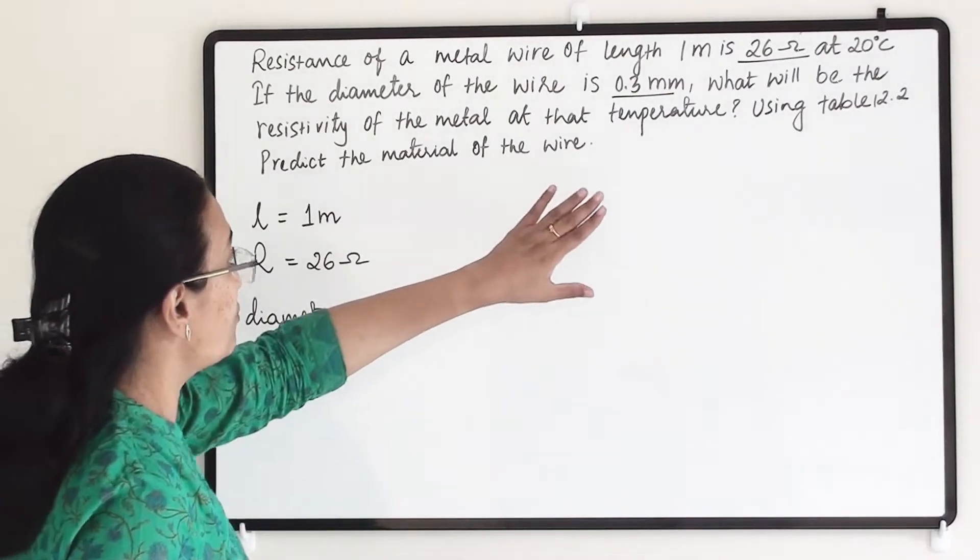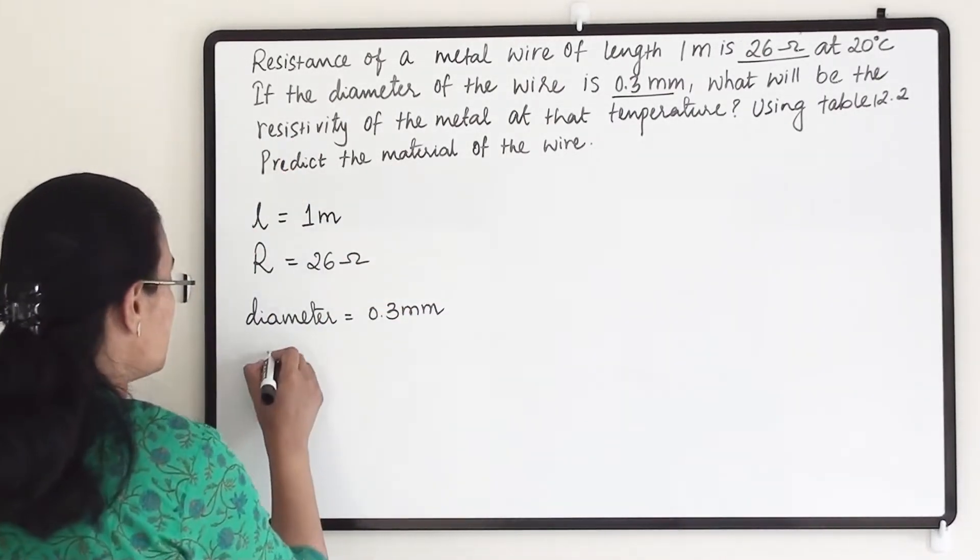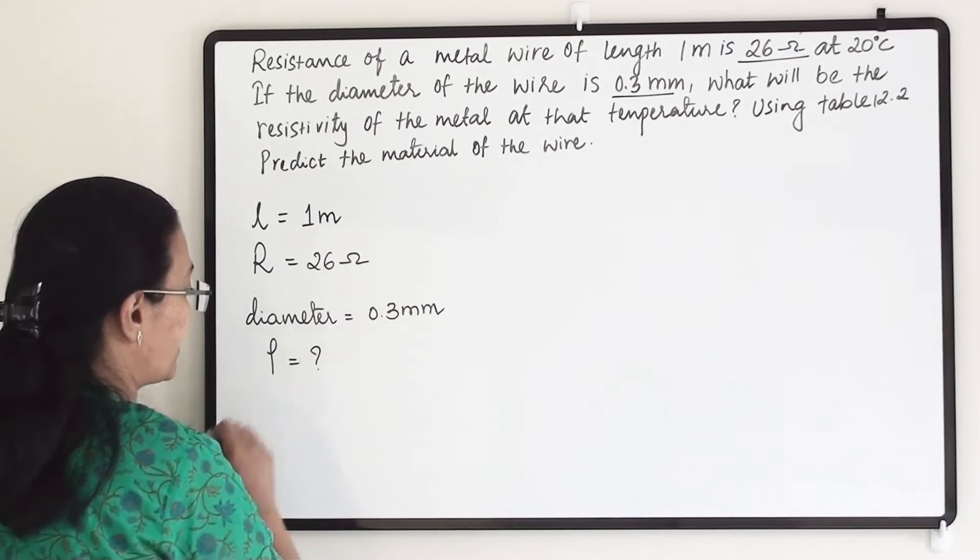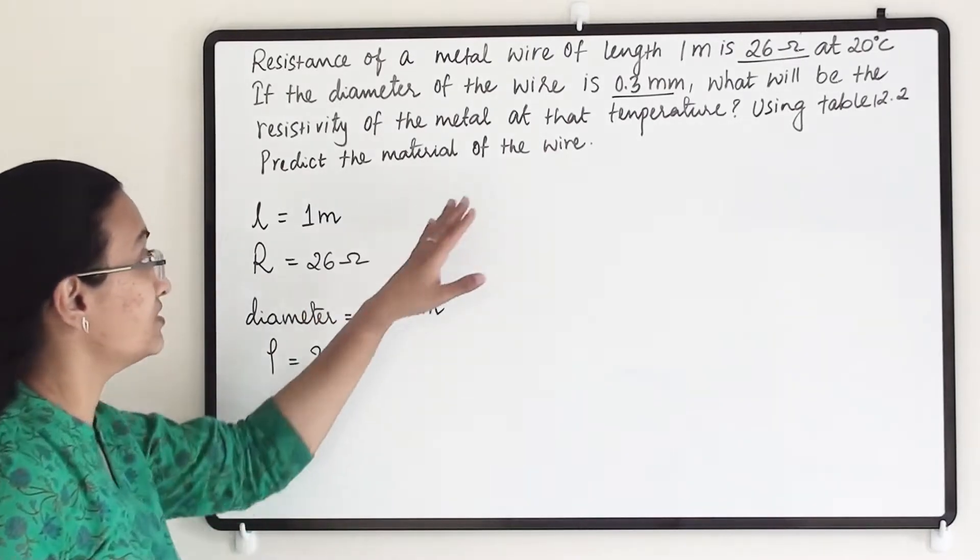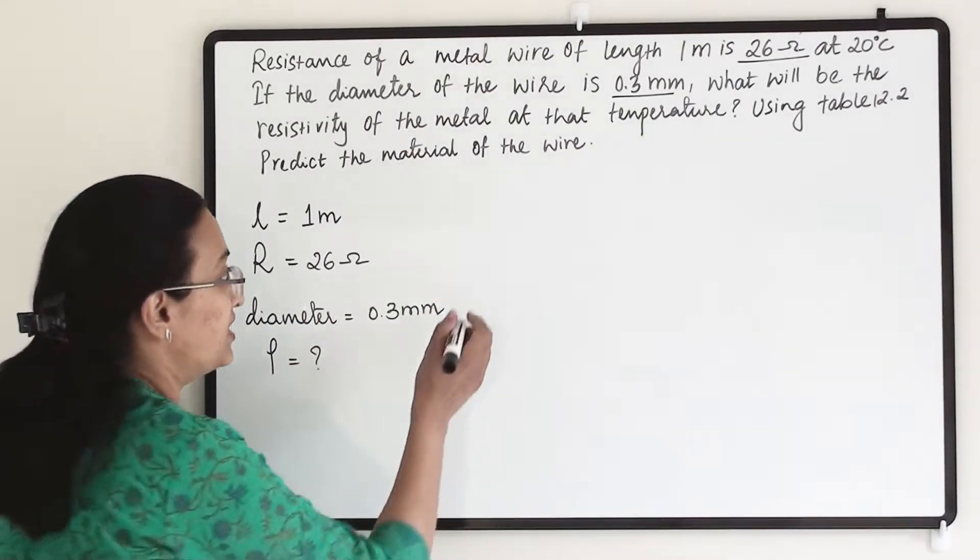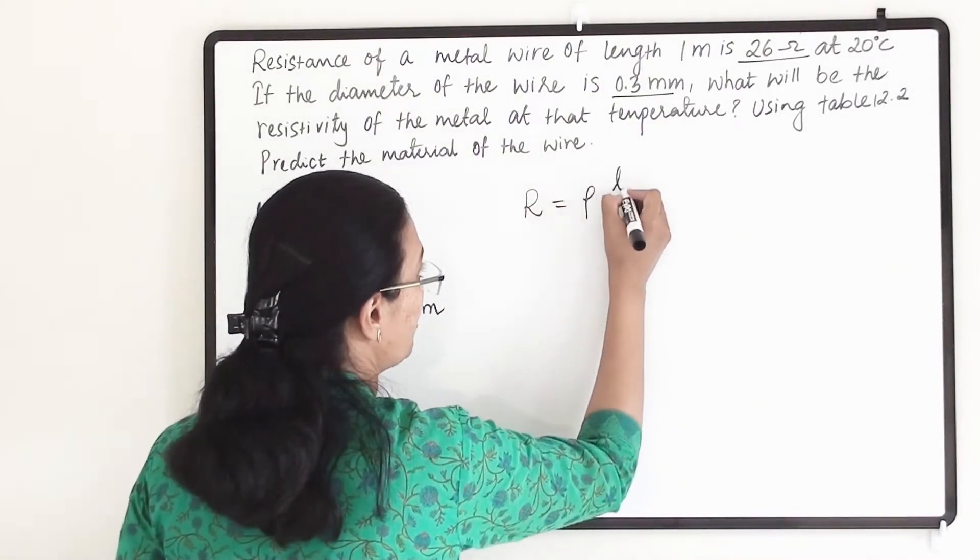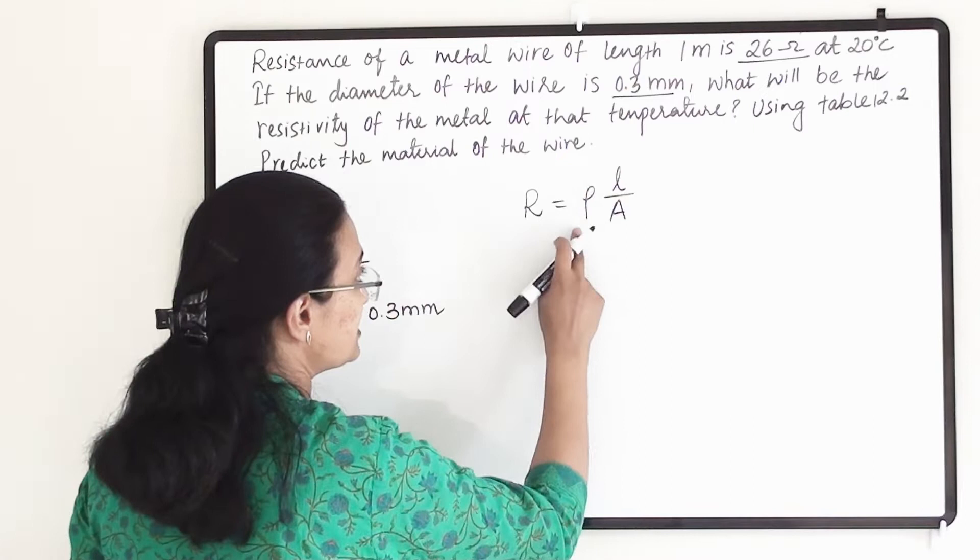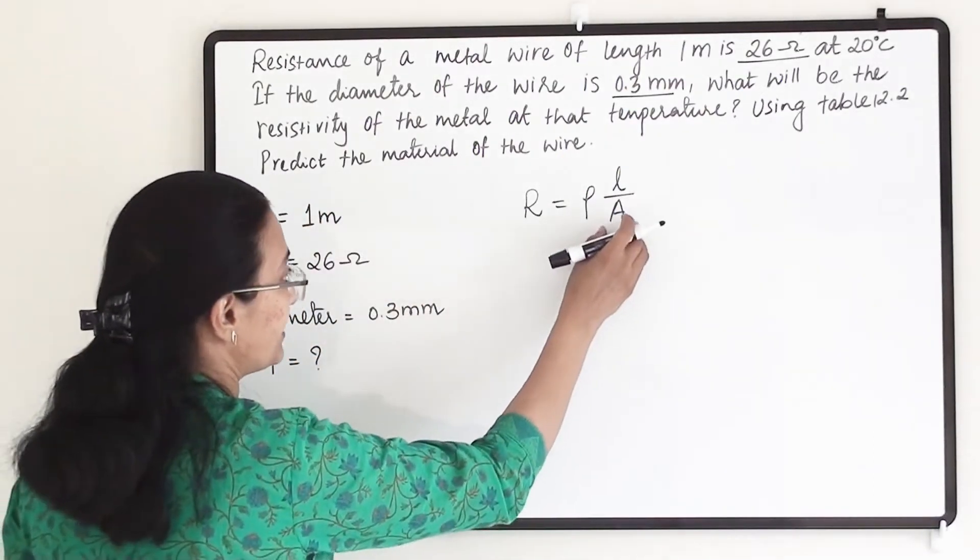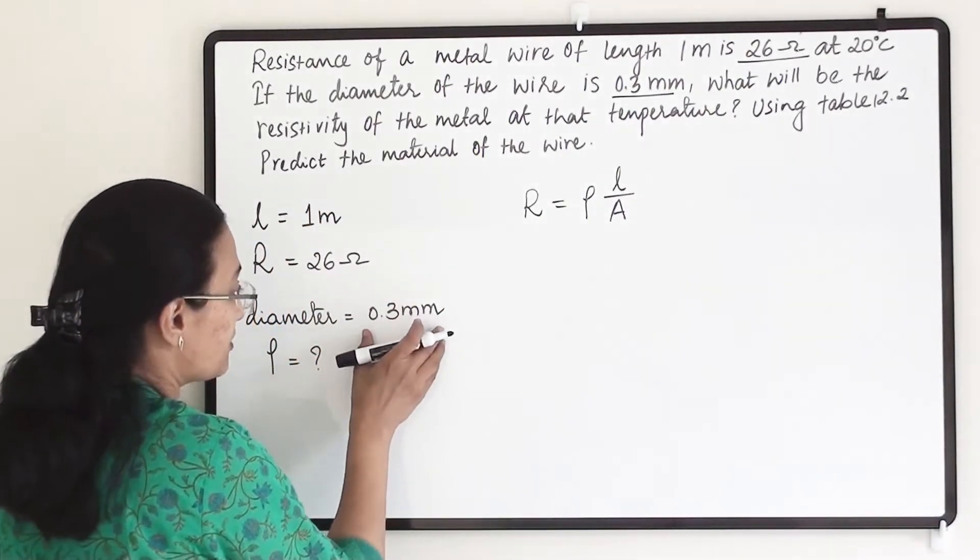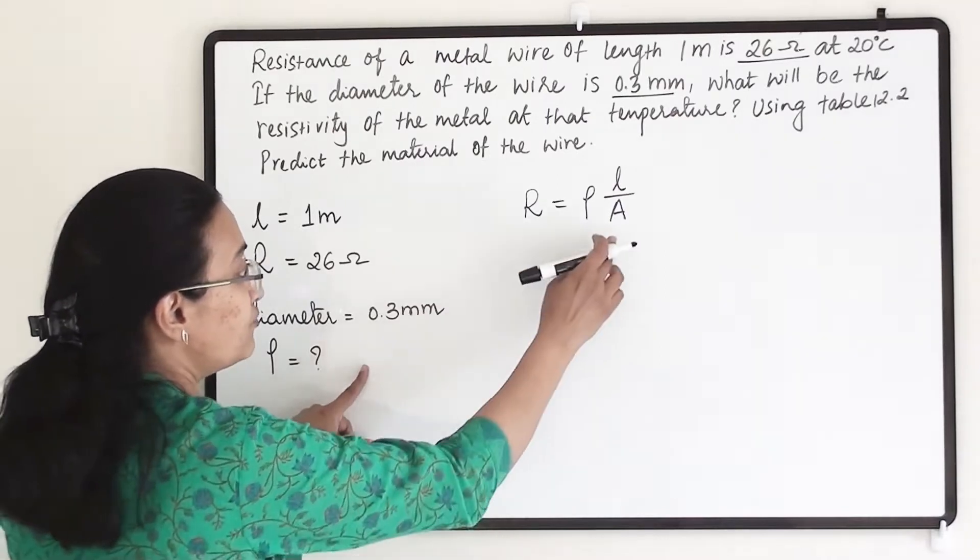Now we have to find out the resistivity, rho. We know the formula R equals rho L by A, where rho is resistivity, L is length of the wire, and A is area. So from diameter we need to find out the area.